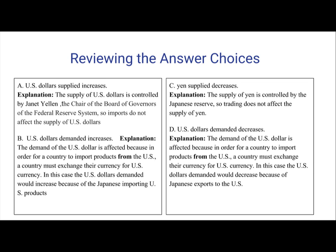C: Yen supplied decreases. What would happen here is that the supply of Yen is controlled by the Japanese Reserve, so trading does not affect the supply of Yen. Remember, money supply is controlled by the federal government — it is not affected by the imports and exports of other countries. So C is incorrect.